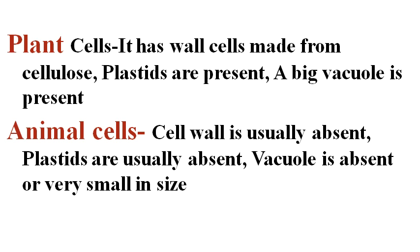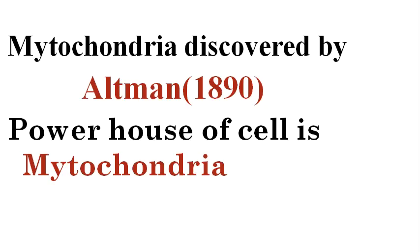Plant cells have a cell wall made from cellulose, plastids are present, and a big vacuole is present. Animal cells: cell wall is absent, plastids are usually absent, and vacuole is absent or very small in size.